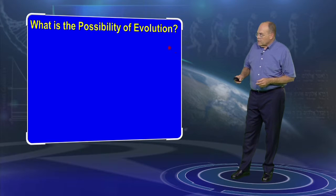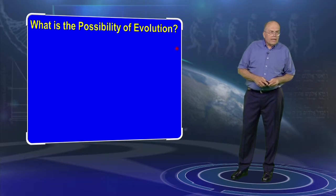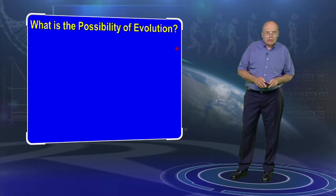Here's a little simple example. What is the possibility mathematically that evolution could be true? We can actually disprove evolution mathematically as well as biologically, astronomically, geologically, paleontologically.